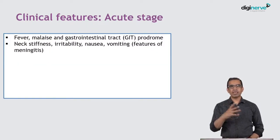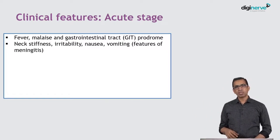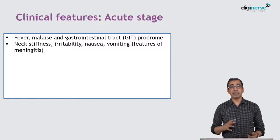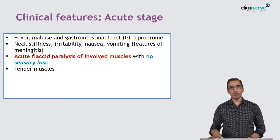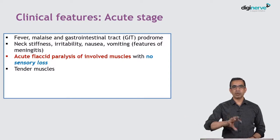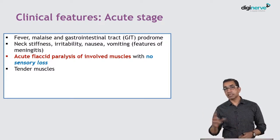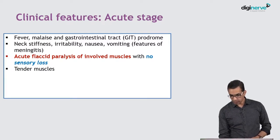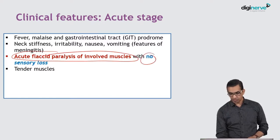The acute stage starts like any gastroenteritis — the prodrome is just gastroenteritis-like features. Sometimes there may be features of neck irritation and some meningeal signs. But typically there will be acute, flaccid, patchy paralysis — some groups of muscles are involved and some are not. It is not symmetrical paralysis everywhere, and that is how you differentiate it from other conditions. There is no sensory loss. So to remember: it is acute, patchy, flaccid paralysis of involved muscles with no sensory loss.